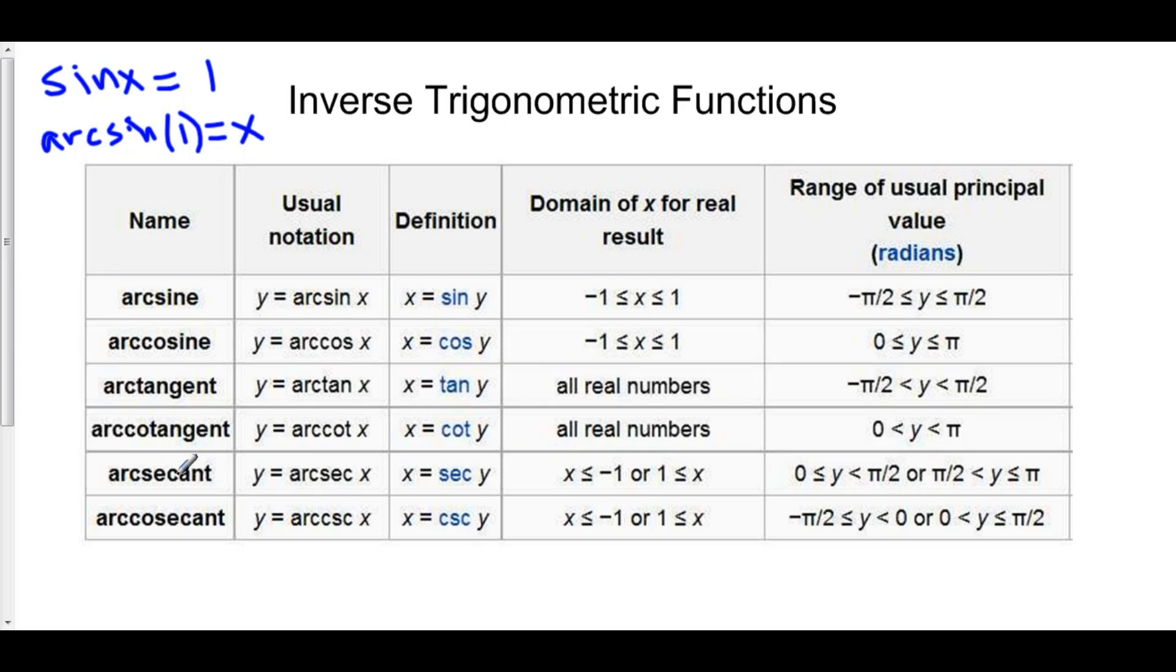Arc secant exists when x is less than or equal to negative 1 or when x is greater than or equal to 1. And arc cosecant, as well.